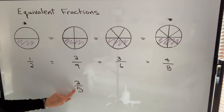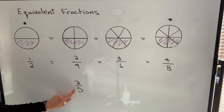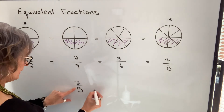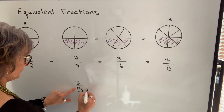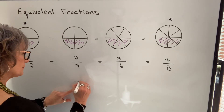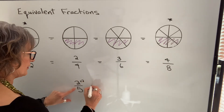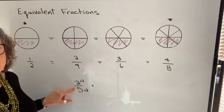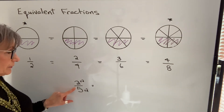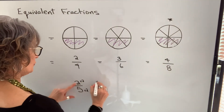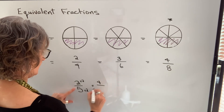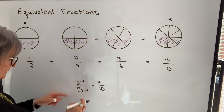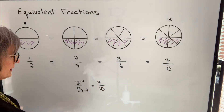Let's say we had a fraction two-fifths. If we multiplied the denominator by any number — let's say we multiply it by two — then we also have to multiply the numerator by the same number. If you multiply the numerator and the denominator by the same number, you will end up with an equivalent fraction. So two times two will be four, and five times two will be ten. So two-fifths is equal to four-tenths.